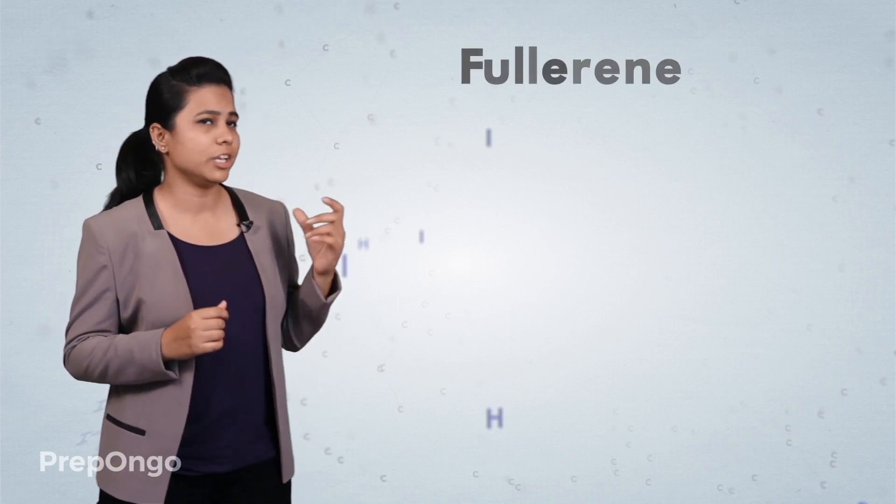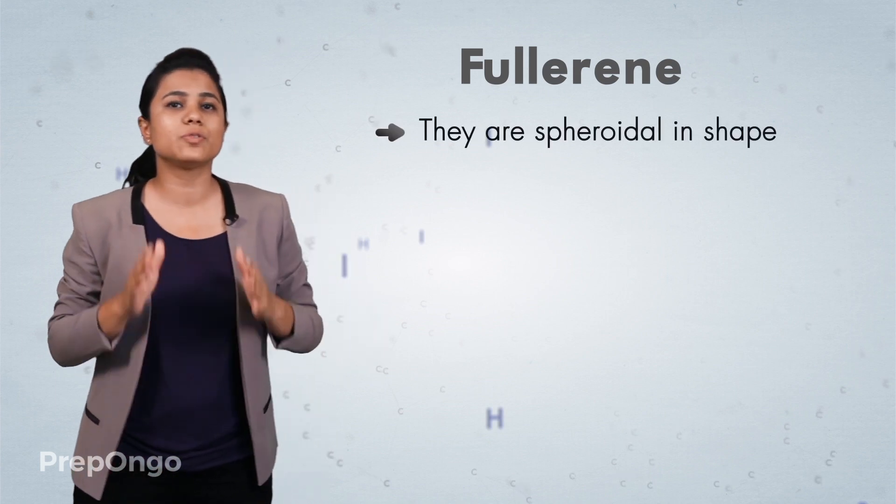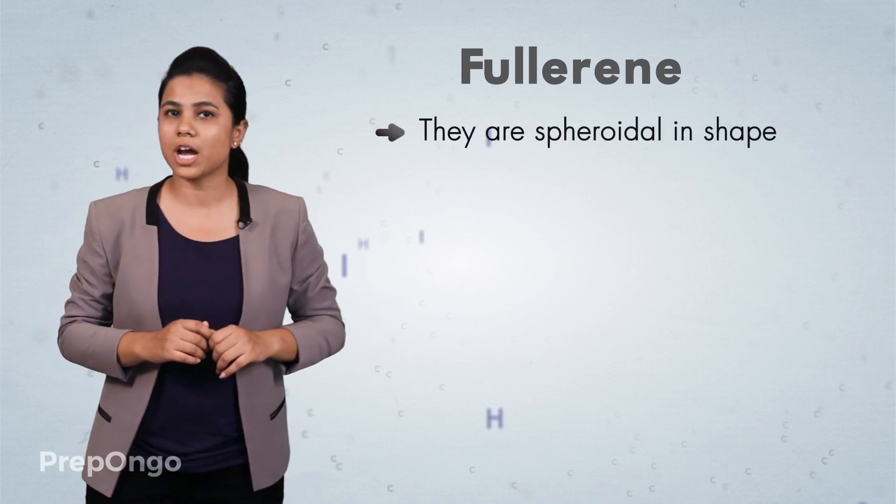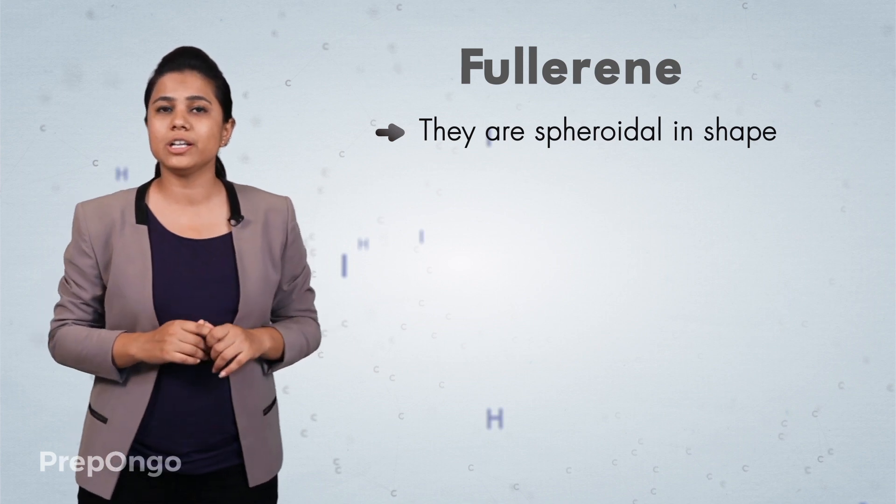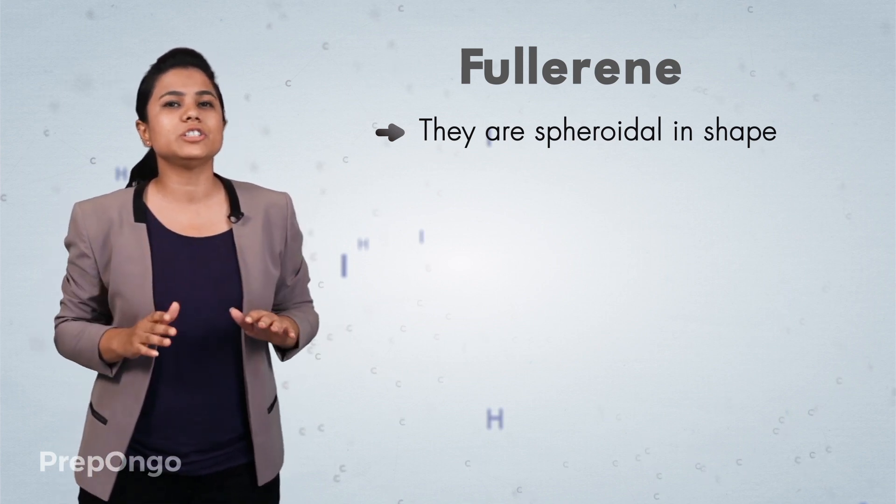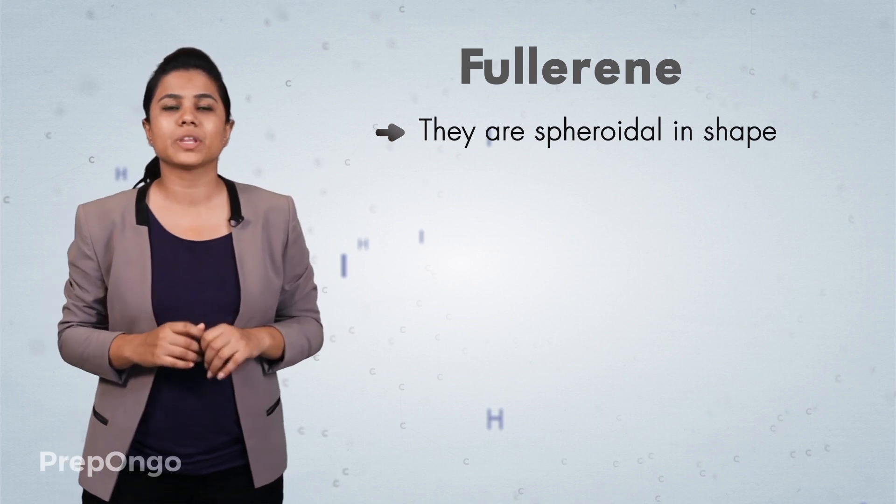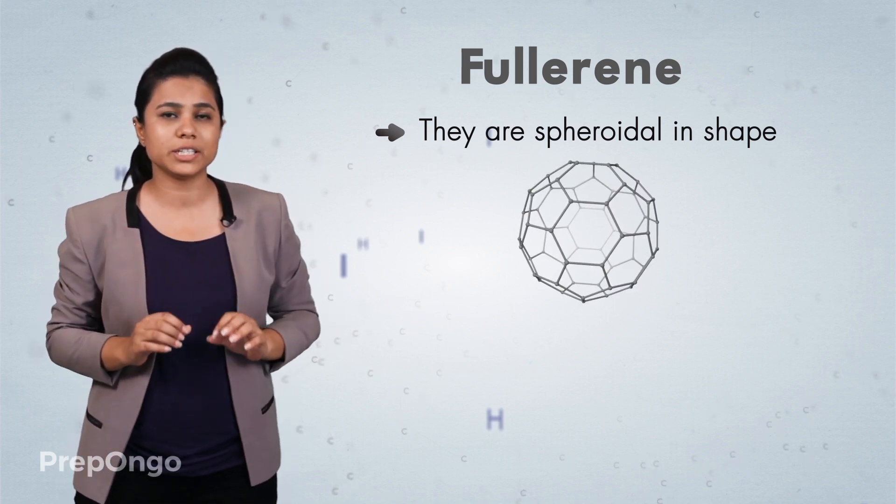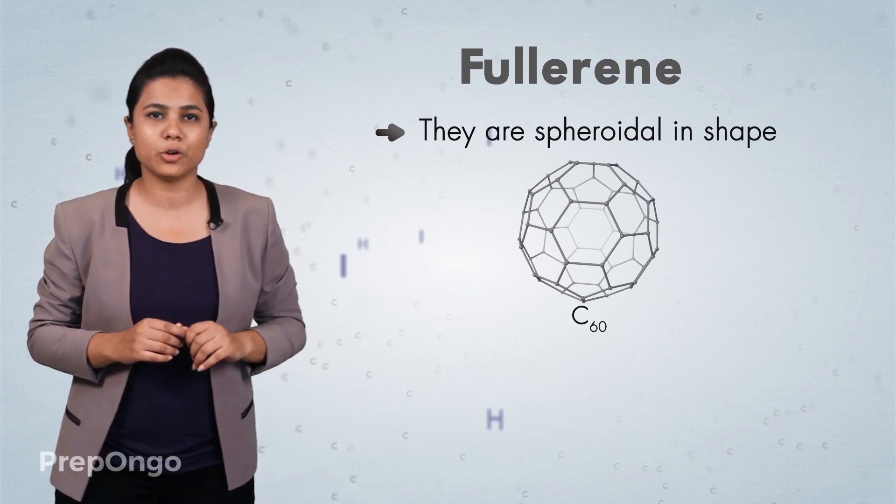Now let's see the third allotrope which is fullerene. These fullerenes are a new class of carbon allotrope. They are spheroidal in shape and contain even number of carbon atoms ranging from 60 to 350. The first one to be identified was C60 which had a shape of football.